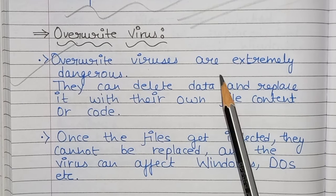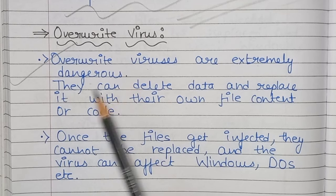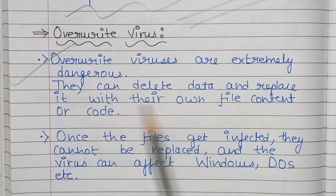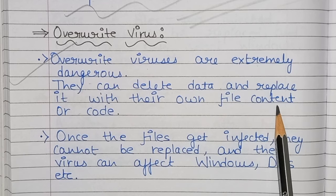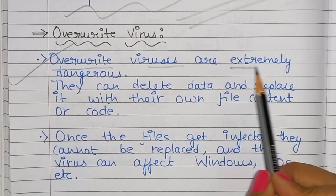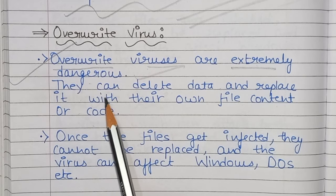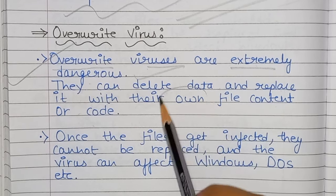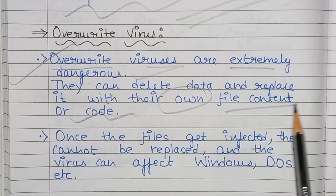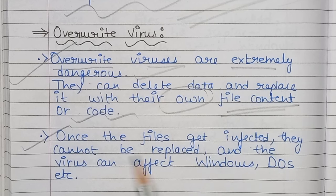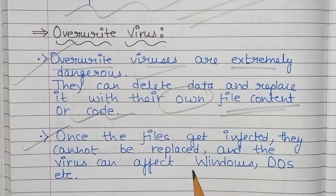Next is overwrite virus. Overwrite viruses are extremely dangerous. They can delete data and replace it with their own file content or code. Once the files get infected, they cannot be replaced, and the virus can affect Windows, DOS, etc.